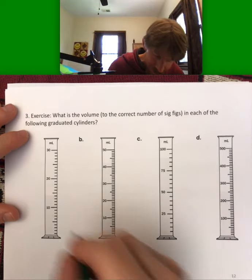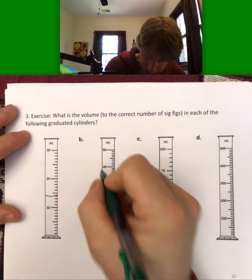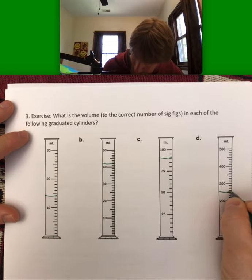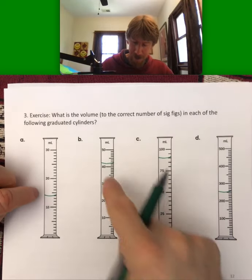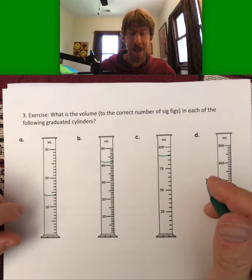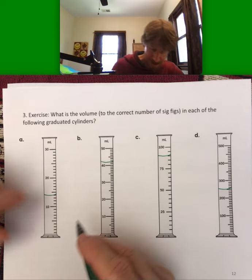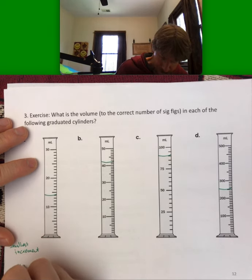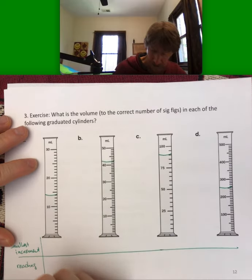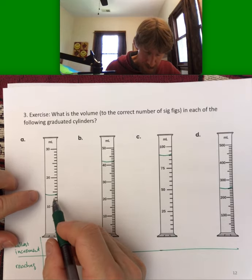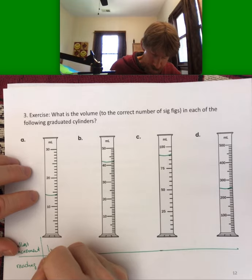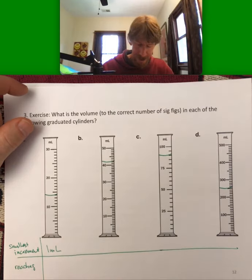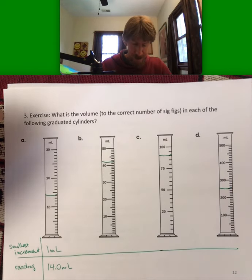This one's kind of hard to see, so I'm going to draw the meniscus for you. At least where I see it. Sorry, when I borrowed this from a source, I couldn't figure out how to do it and have the lines show up. But now hopefully you can see the lines. Please draw the lines on yourself. And then you'll see that this one. So smallest increment and reading. So your smallest increment here is going to be one milliliter. That means you have to read it to the nearest tenth of a milliliter, even if it's exactly 14. So the correct measurement here is 14.0 milliliters.